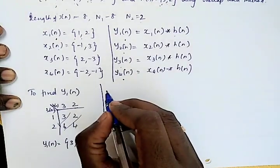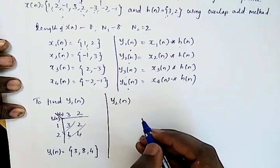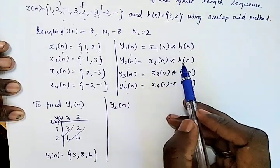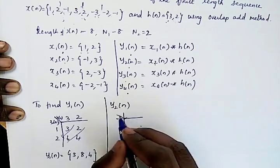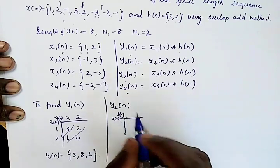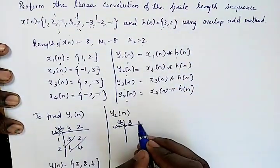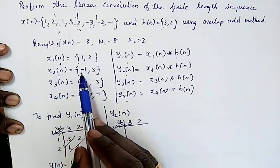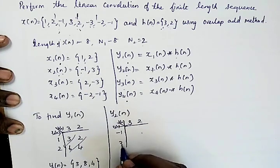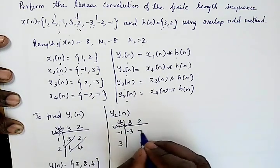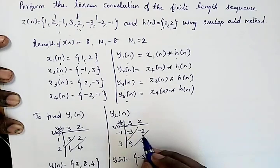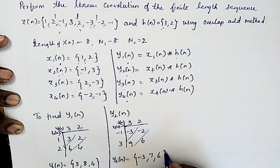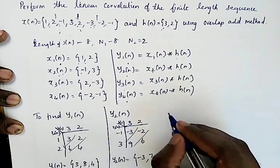Similarly, we find y2[n] = x2[n] convolved with h[n]. Here h[n] = {3, 2} and x2[n] = {-1, 3}. Multiplying: -1 times h[n] gives {-3, -2}, and 3 times h[n] gives {9, 6}. Adding diagonally, y2[n] = {-3, 7, 6}.